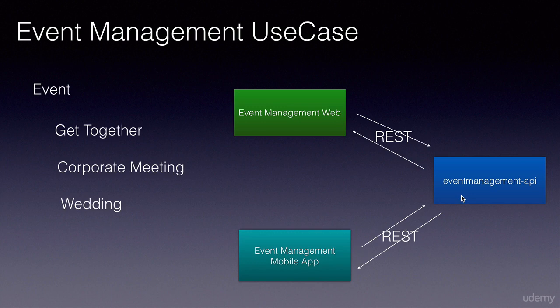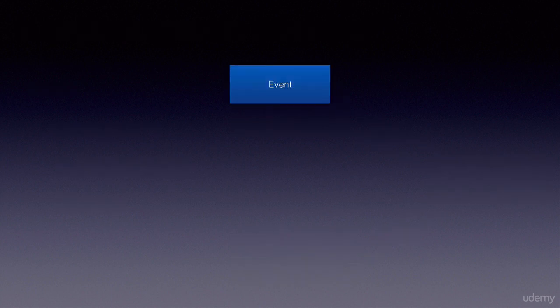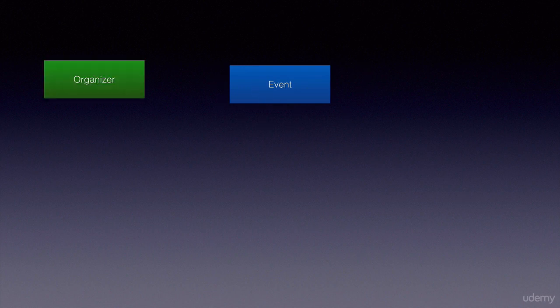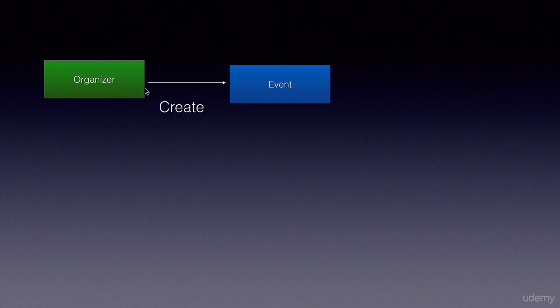Getting to the lower level details, to look at the entities or the resources in this application — it all starts with an event, which will be created by an organizer of that event. So organizer is one resource, then we have event, and when the organizer creates an event,